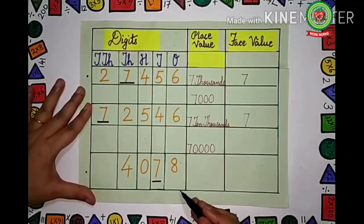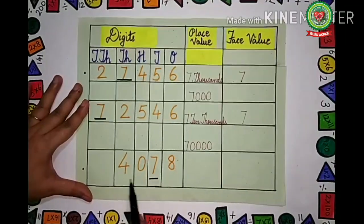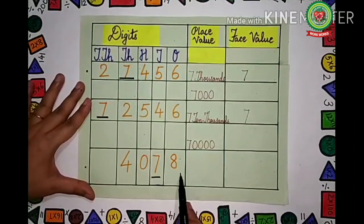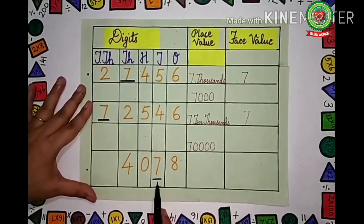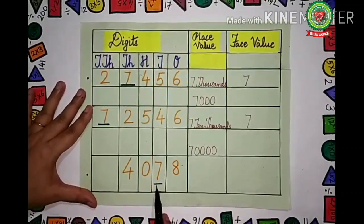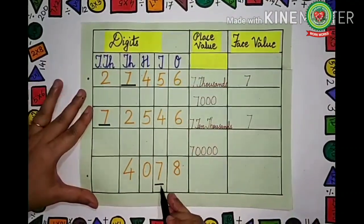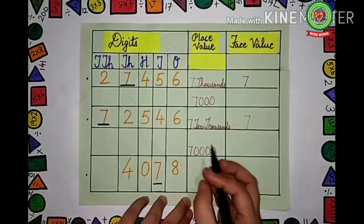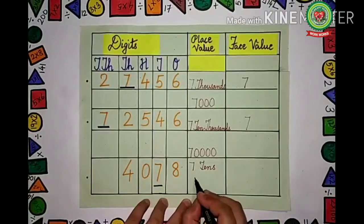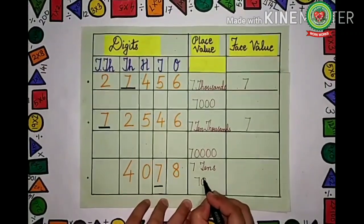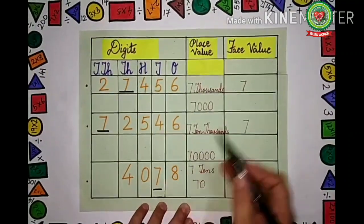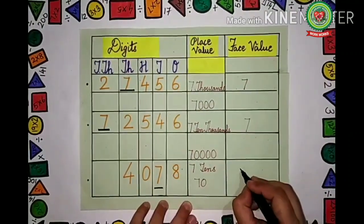Let us take the next example. Read the question: 4, 0, 7, 8. Which is the underlined digit? 7 is the underlined digit. 7 is coming under which place value? 7 is coming under the 10's place value. So the place value of 7 will be 10's — we will write 7 tens, or 7T, because 10's has one zero, making it 70. The face value of 7 will be 7 itself.